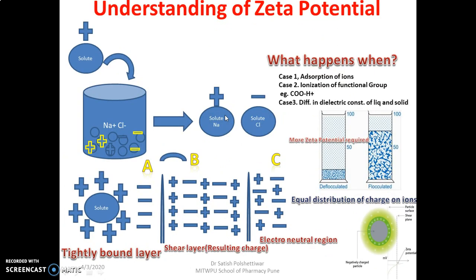The next part is Zeta potential. What is Zeta potential? Zeta potential is nothing but the electrokinetic potential. When you mix a solute into any solvent, electric potentials are generated. Zeta is a Greek word, and potential is denoted by the symbol Zeta — that's why it is called Zeta potential.